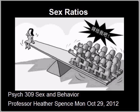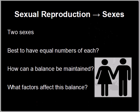Welcome to the exciting topic of sex ratios. The article you read should give you a pretty good idea of what this is about. We're talking about sexual reproduction, and one of the interesting things we get with sexual reproduction is sexes. Taking the two-sex system, this raises some fundamental questions: Is it best to have equal numbers of each sex? How can a balance be maintained stably over many generations? And what kinds of factors affect this balance?